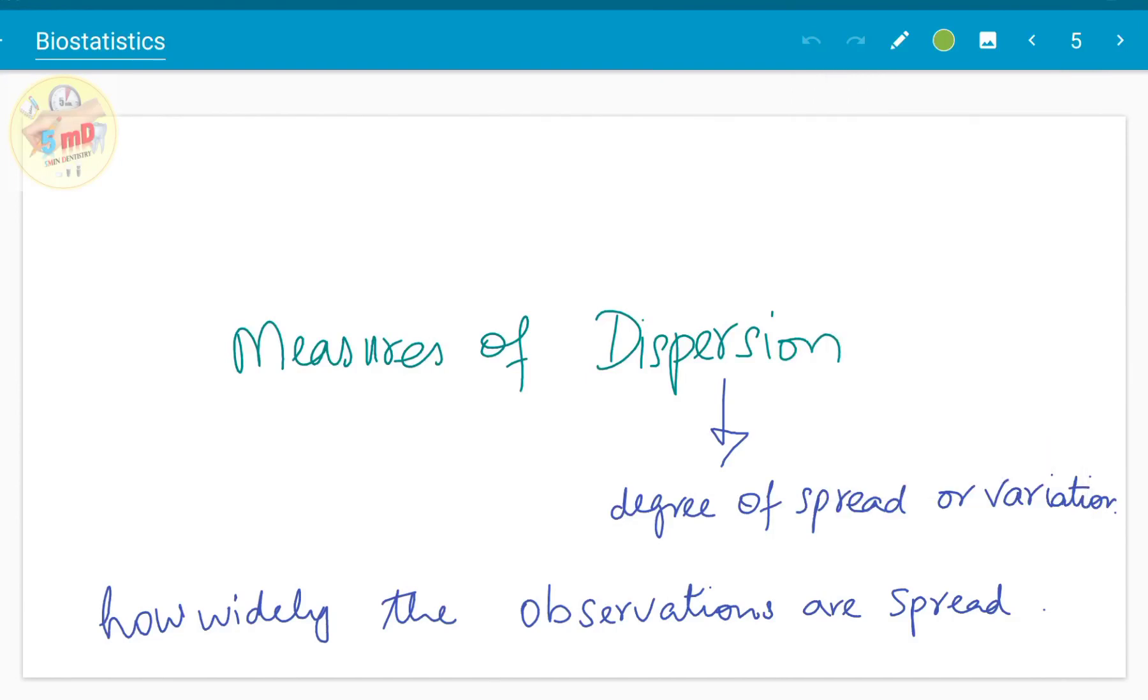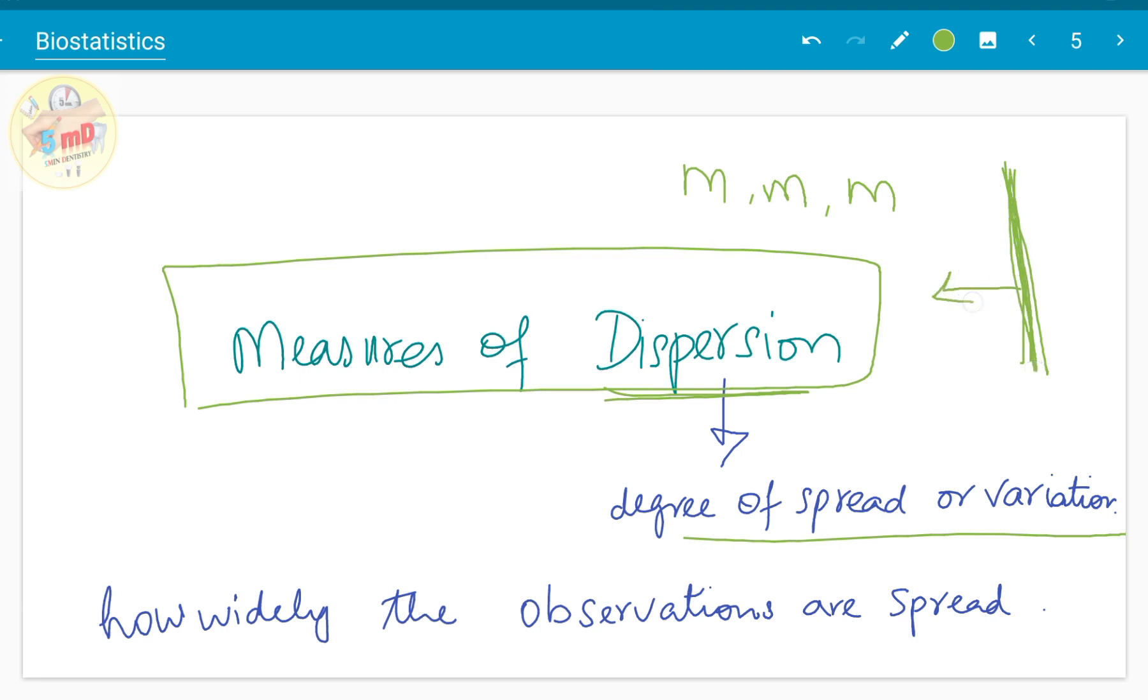In this video on biostatistics, we will see about measures of dispersion. Measures of dispersion are needed to know the degree of spread or variation from the mid value. We already saw the measures of central tendency: mean, median, and mode. From the mean value, how much the observations are spread or dispersed? To find out that, we use the measures of dispersion. How widely the observations are spread—that is the purpose.